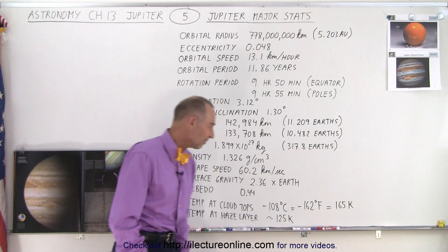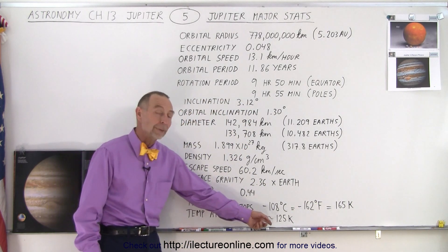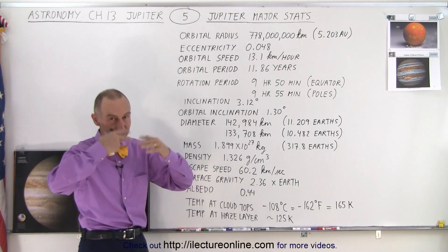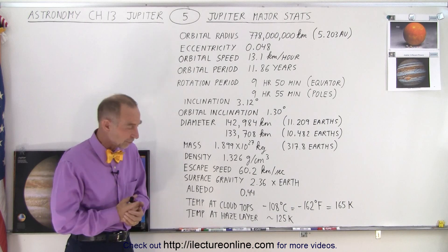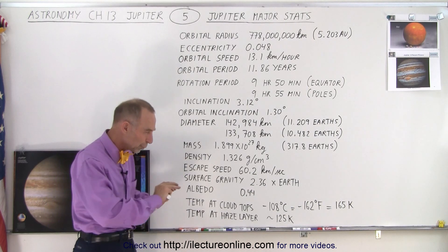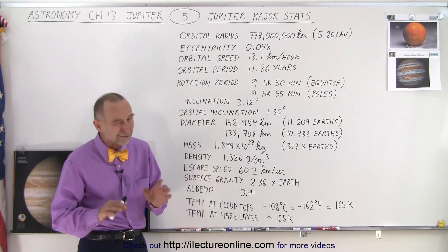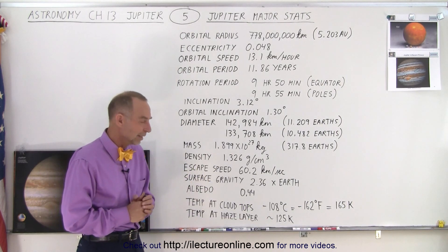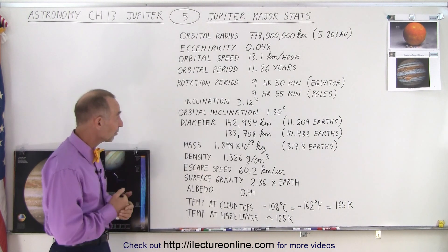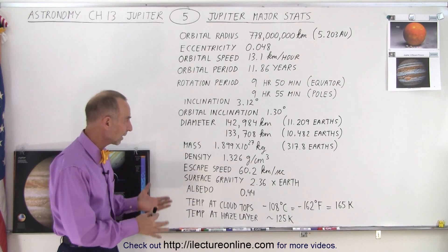That's about 165 Kelvin at the cloud tops. The temperature at the haze layer is actually a little bit less, so if you go a little bit higher the temperature drops, and then going higher again the temperature increases — just like it does on Earth. The coldest region in the atmosphere is down to somewhere between 115 and 125 Kelvin. We'll talk about it in a bit more detail, but these are the major statistics of the planet Jupiter.